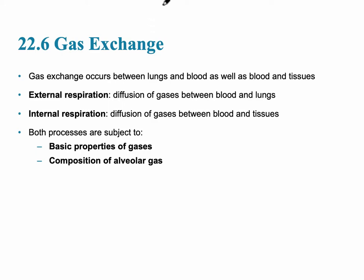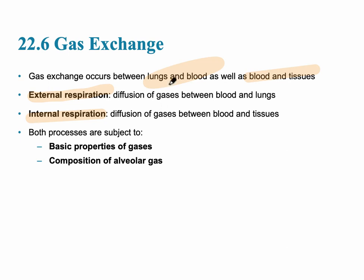Gas exchange occurs between the lungs and the blood — this is external respiration — and it also occurs between the blood and the tissues, which is internal respiration. Recall that external and internal respiration were mentioned at the very beginning of this chapter, and both of these processes are subject to the properties and composition of the gas that we're breathing.